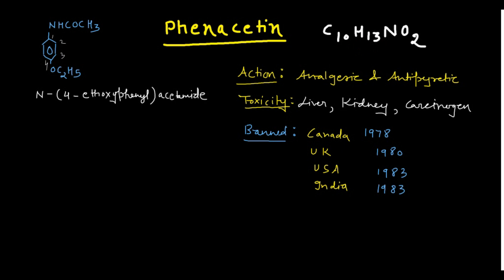When it comes to the action of this drug, phenacetin is both analgesic and antipyretic. Analgesics relieve pain; antipyretics reduce body temperature during fever. Phenacetin acts in both ways. However, the problem with this drug is that it is highly liver toxic. Literature clearly documents liver toxicity, and there are well-documented case studies of kidney toxicity. It can also cause renal cancer, making it carcinogenic.